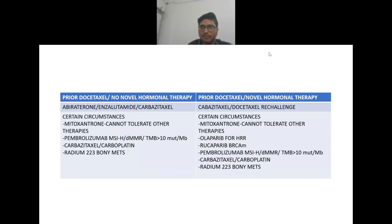If prior docetaxel and no novel hormonal therapy has been given, options are abiraterone, enzalutamide, and cabazitaxel. In certain circumstances, mitoxantrone is given for patients who cannot tolerate other therapies as mainly palliative therapy, and pembrolizumab, cabazitaxel-carboplatin combination, and radium-223 for bone mets.